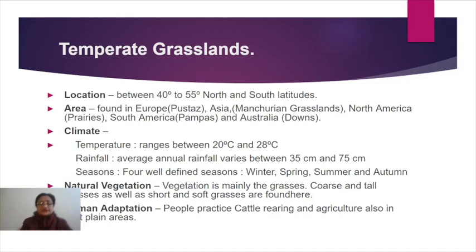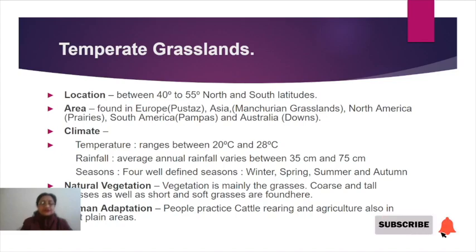In the northern hemisphere, winters in temperate grassland regions are comparatively colder. In contrast, temperate grasslands in the southern hemisphere have comparatively less severe, more moderate winters. This moderating influence is due to the influence of oceans, seas, and land and sea breezes.